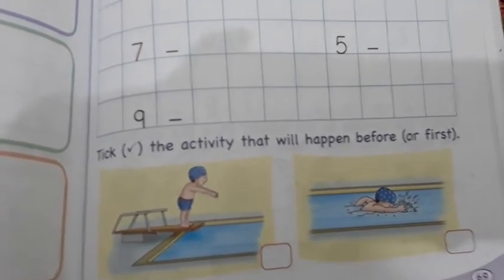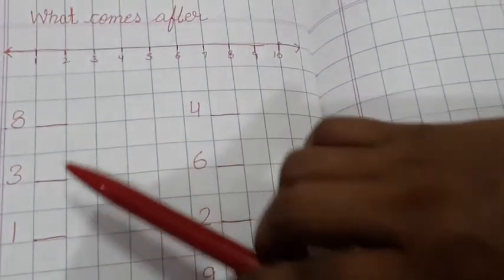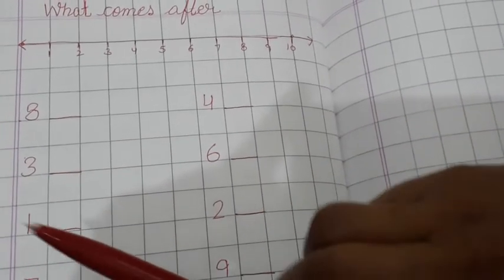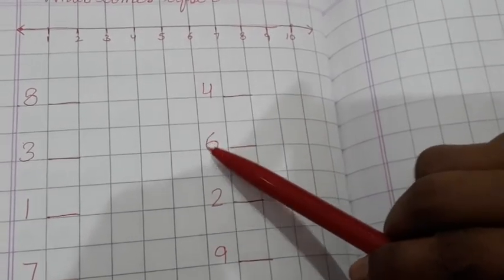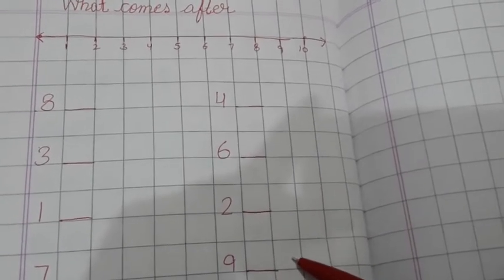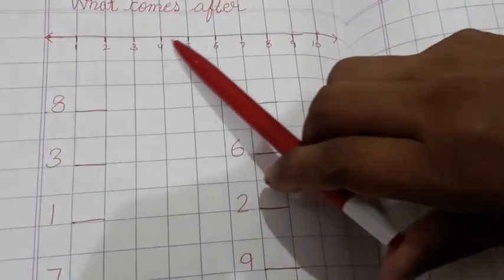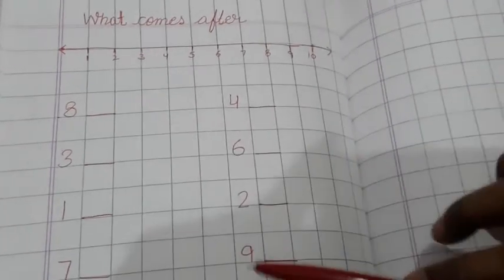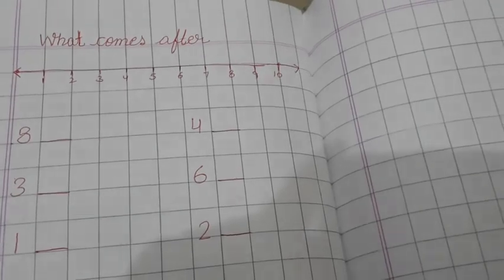Now I want to show you your maths notebook. First write down today's date, then do 'what comes after.' I have given some numbers: 8 — what comes after 8? 3 — what comes after 3? 1 — what comes after 1? 7 — what comes after 7? 4 — what comes after 4? 6 — what comes after 6? What comes after 2? What comes after 9? You can also draw a number line to help you find the answers. Complete this notebook work and send it to me. Goodbye, take care of yourself!